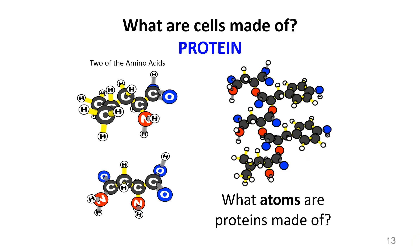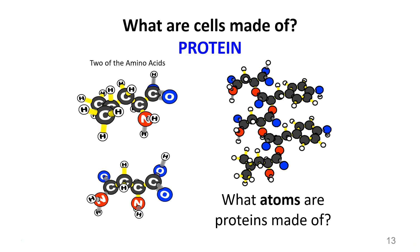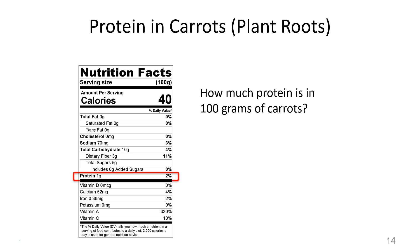The last major molecule found in cells is protein. Protein molecules are made up of amino acids. What atoms are proteins made of? There are some familiar ones, but you might notice something new: proteins contain nitrogen atoms, as well as carbon, hydrogen, and oxygen. You might not associate plants with proteins, but protein is found in all cells. Looking at the carrot nutrition label, one gram out of 100 is protein — so approximately 1% of carrot cells are protein.